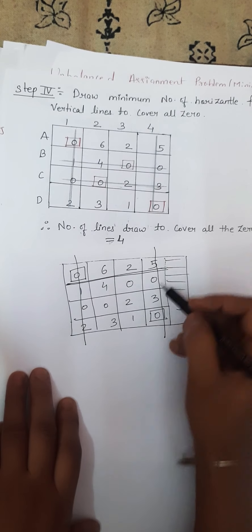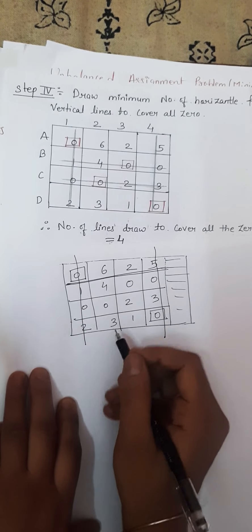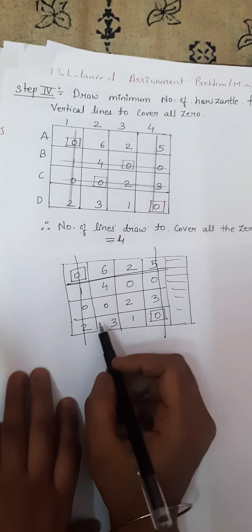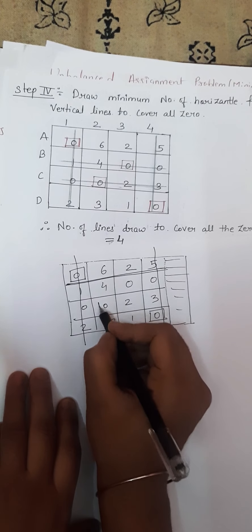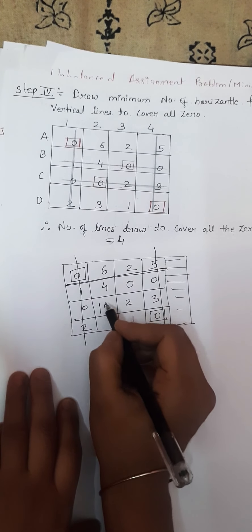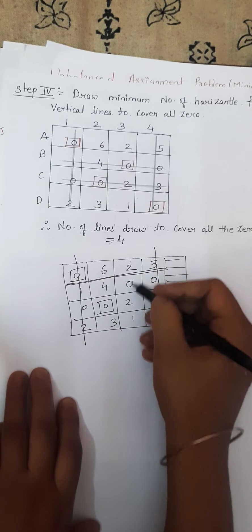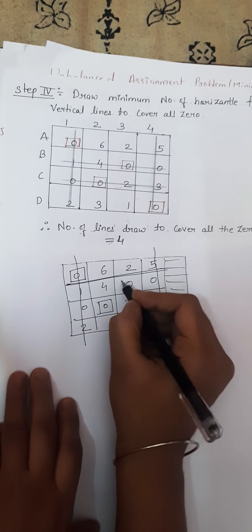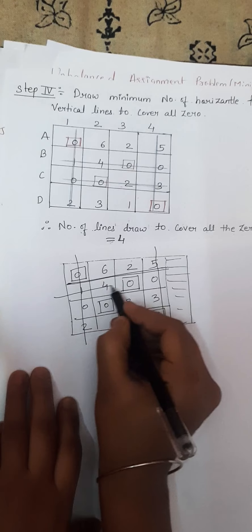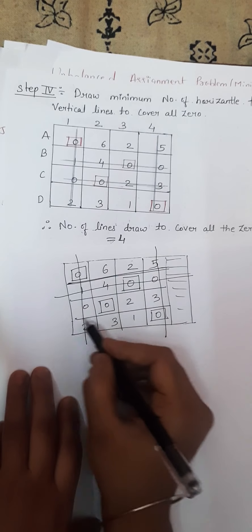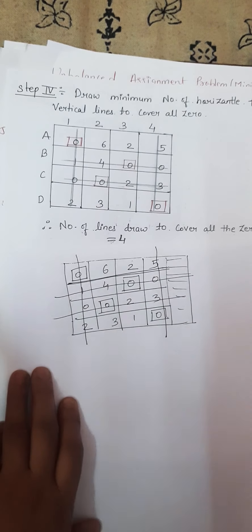Now we go for column scanning. Here we have one zero in this column, therefore we allocate it. We have one zero in this column, therefore we allocate it. We draw horizontal lines through these allocated cells.